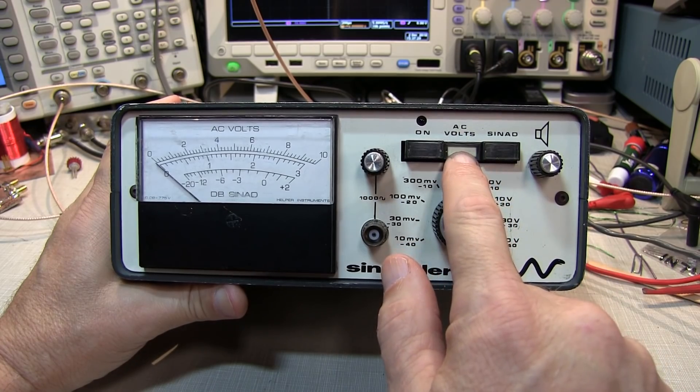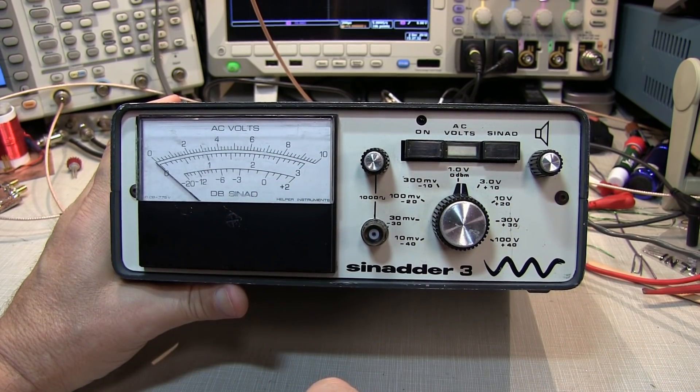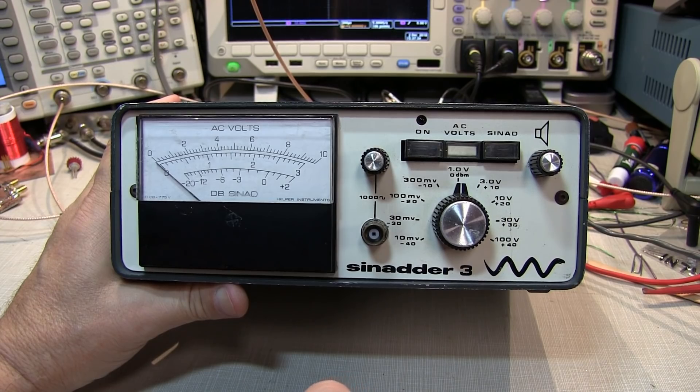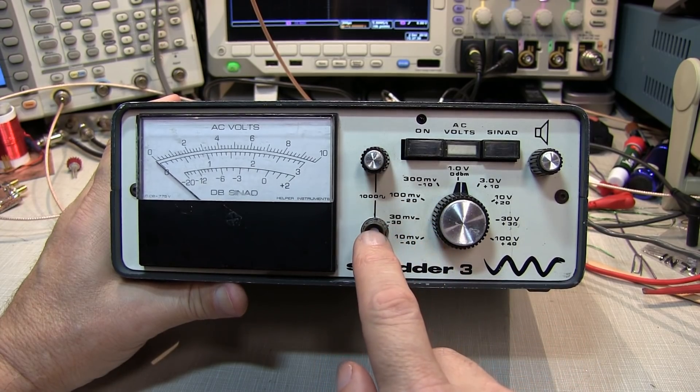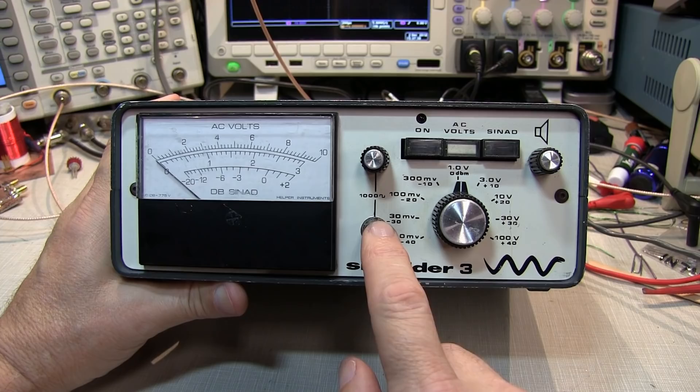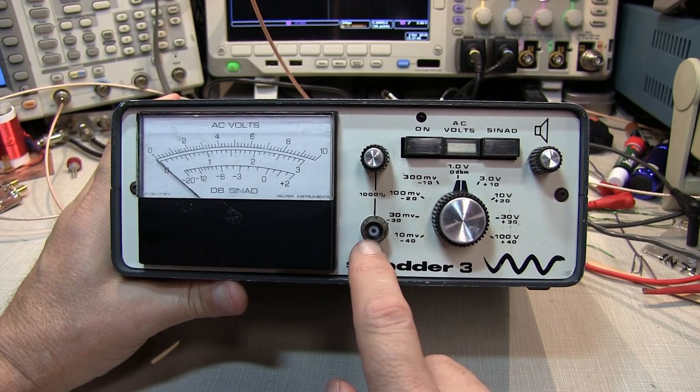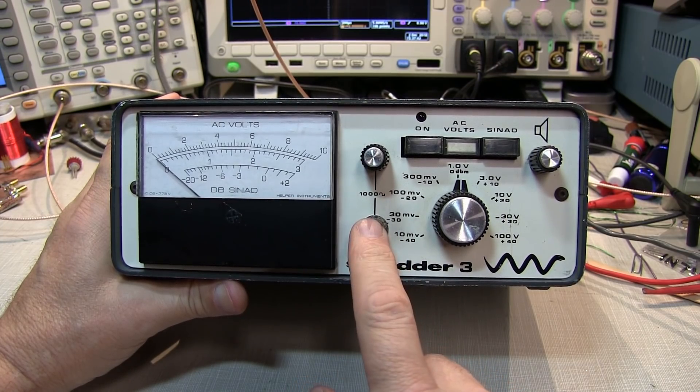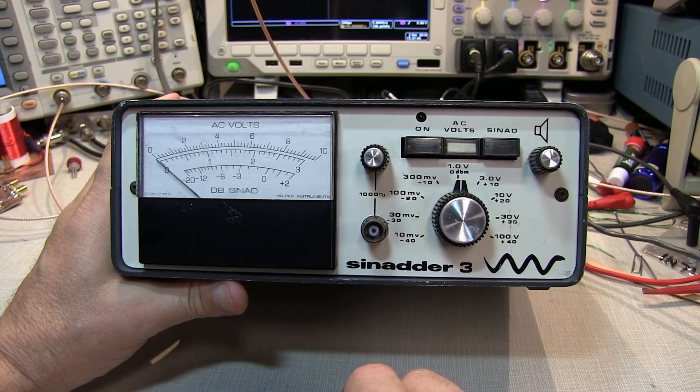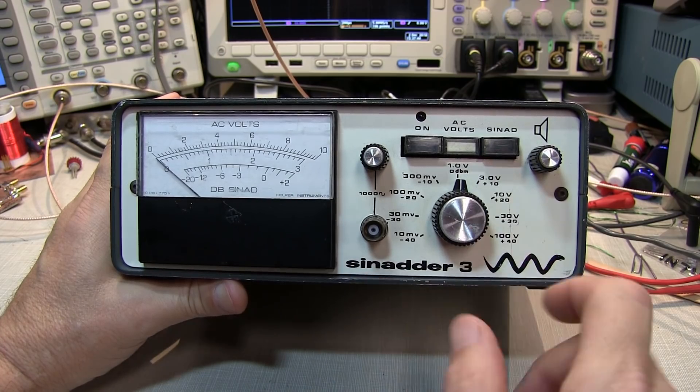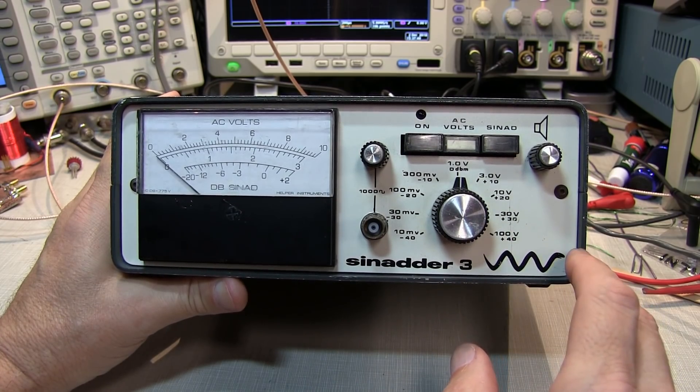One is simply an AC voltmeter to measure audio frequency AC voltage. The second is a low distortion 1kHz sine wave that can be used as a baseband signal for aligning radio receivers as well as audio stages. And then third is a SINAD meter. So let's talk about what I mean by that.